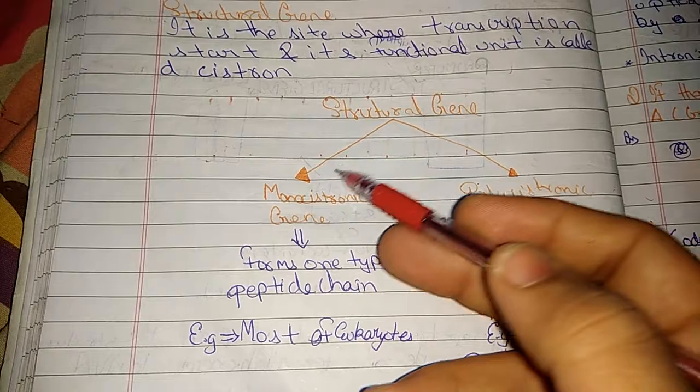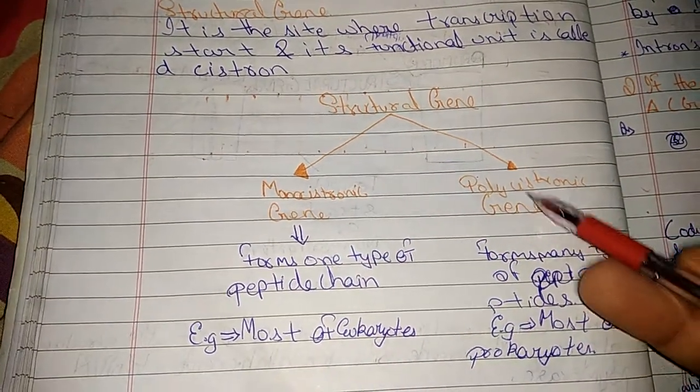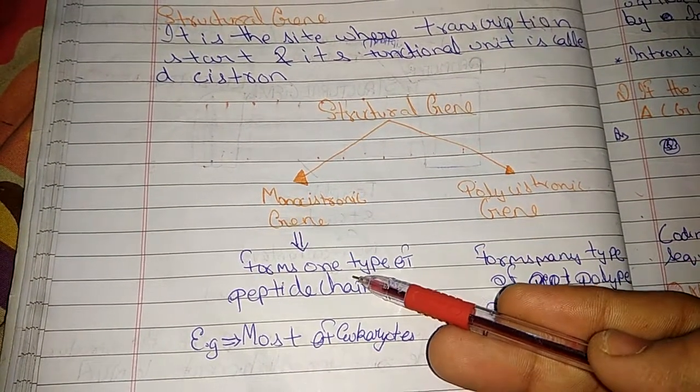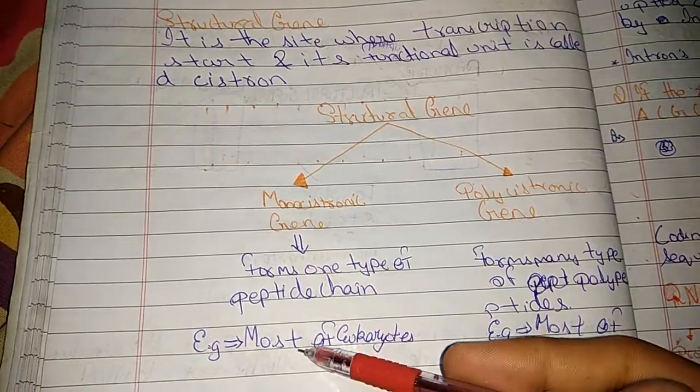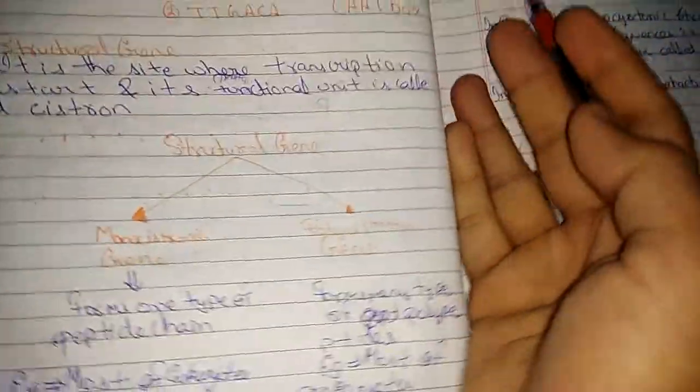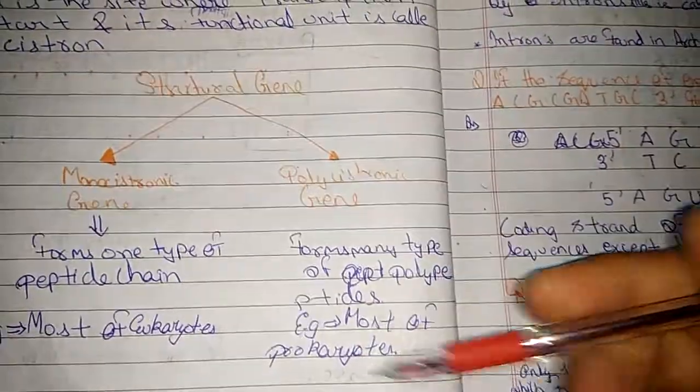Now structural gene is divided into monocystronic gene and polycystronic gene. Monocystronic means forms only one type of polypeptide chain found in most eukaryotes. Polycystronic means multiple types of polypeptide chains found in prokaryotes.